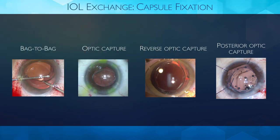IOL Exchange and capsule fixation can be bag-to-bag, or can have optic capture — where the optic is captured behind the anterior capsule opening and the haptics are in the sulcus. Reverse optic capture is when the haptics are in the bag and the optic is brought anterior to the anterior capsule. And posterior optic capture is when the haptics are in the sulcus and the optic is captured behind the posterior and anterior capsule.